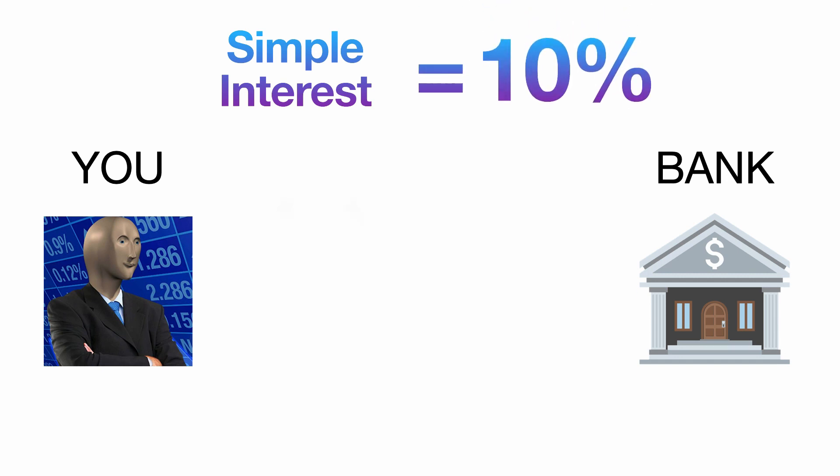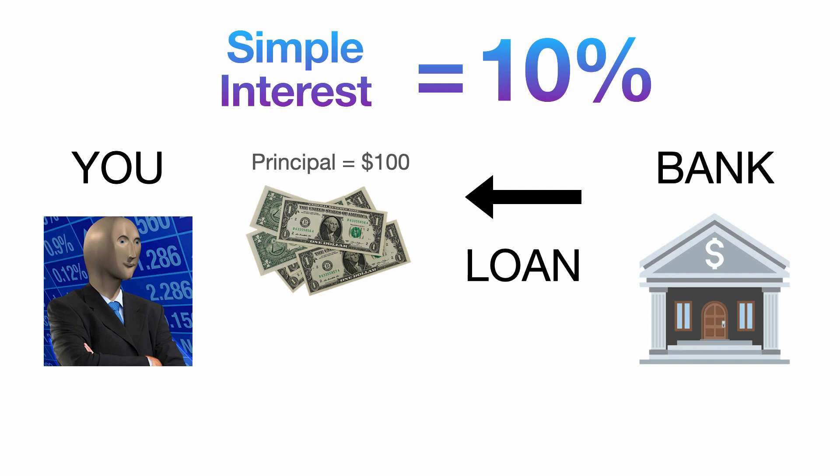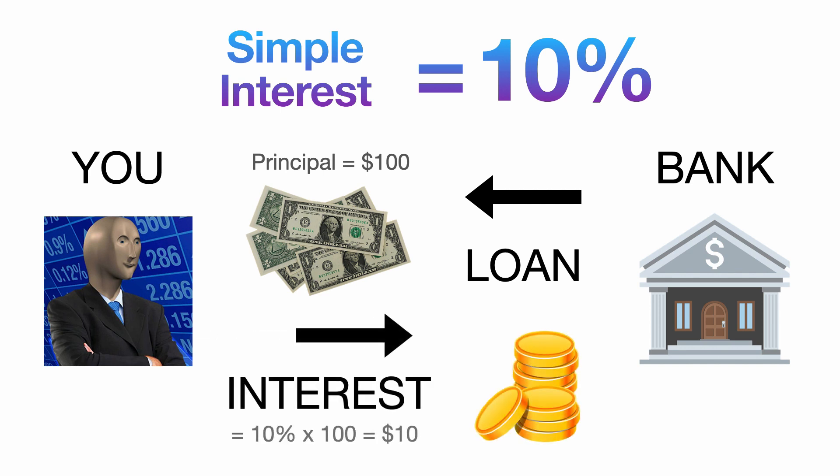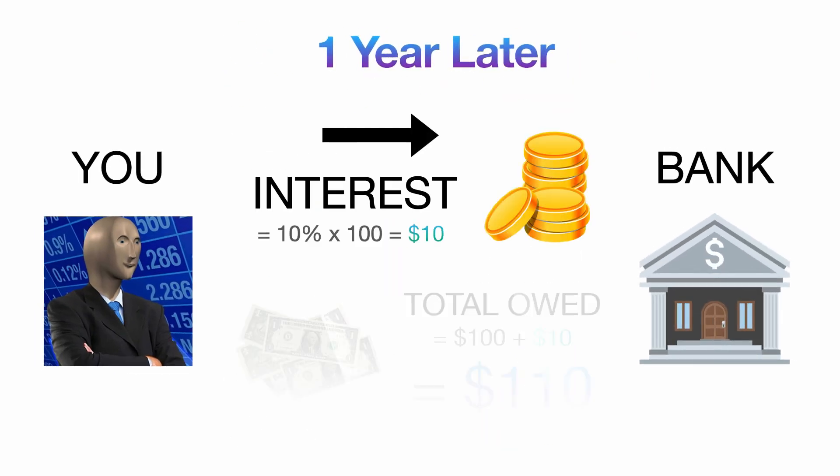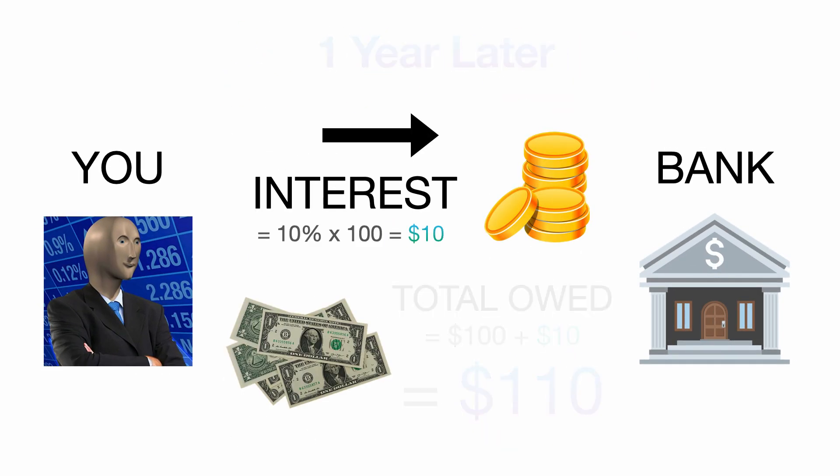Simple interest is pretty straightforward, it's the constant amount of money that only depends on the initial amount that you either borrowed or invested. So for example, you could borrow $100 from the bank, and the bank asks you to pay 10% of $100, which is $10, every year. After a year you'd owe $110 in total, and after another year you'd owe $120.